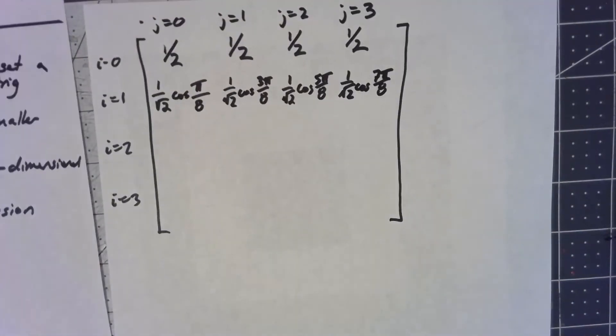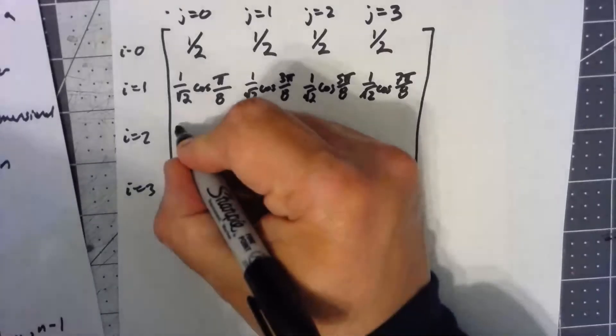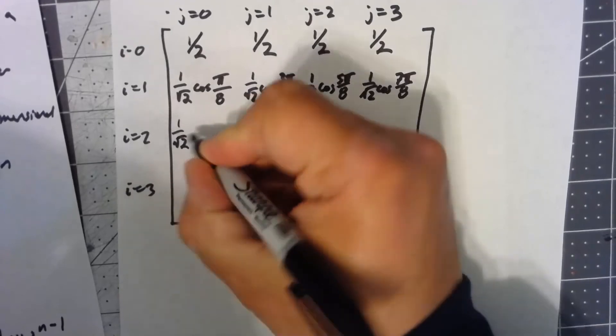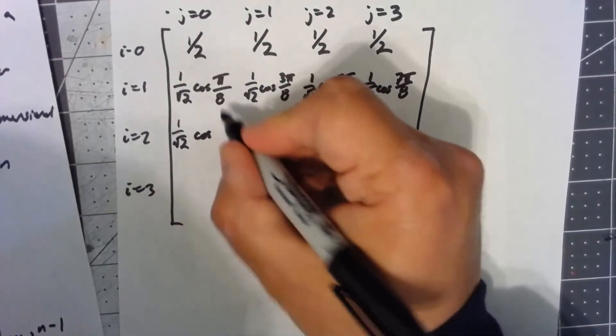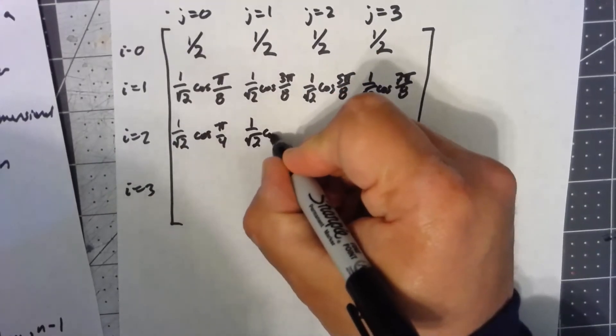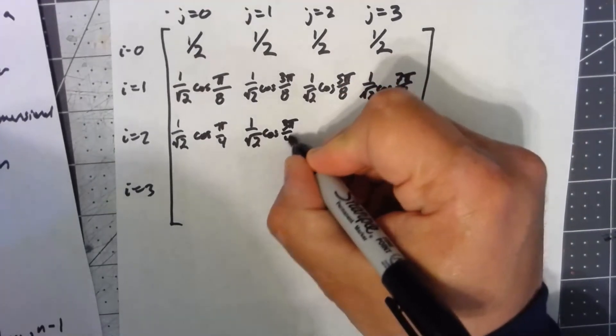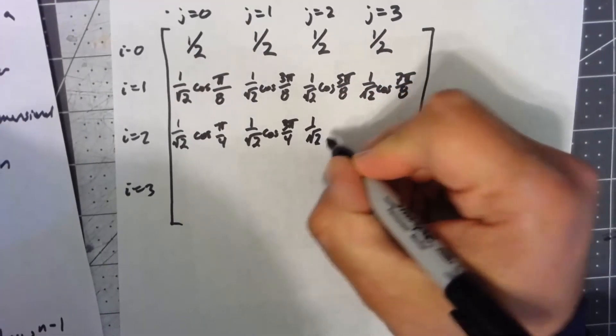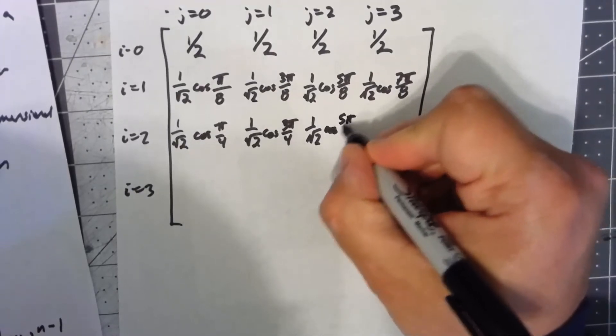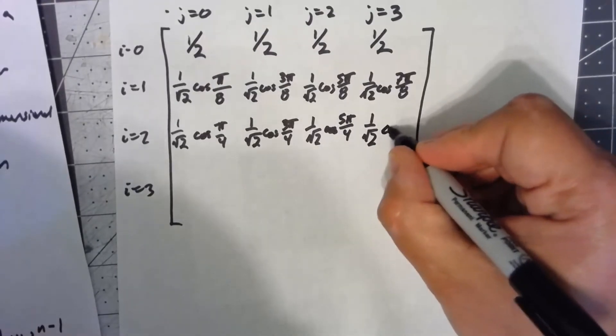Next line is the exact same thing, except my i is 2 now, so I can cancel that 2 with the 8. So I'm going to have 1 over the square root of 2 cosine of either 2 pi over 8 or pi over 4, 1 over the square root of 2 times the cosine of 3 pi over 4, 1 over the square root of 2 times the cosine of 5 pi over 4, and 1 over square root of 2 times the cosine of 7 pi over 4.